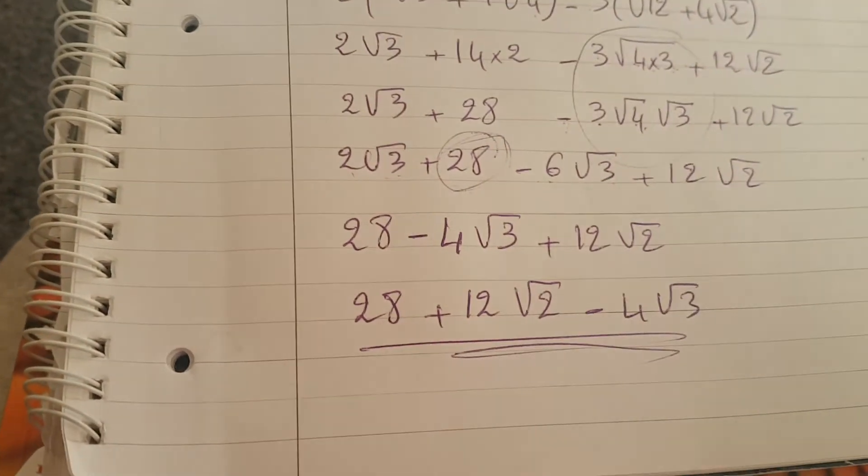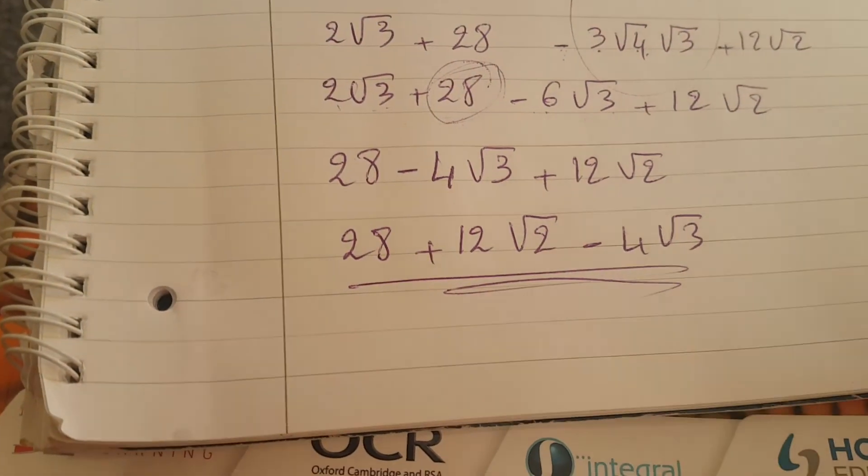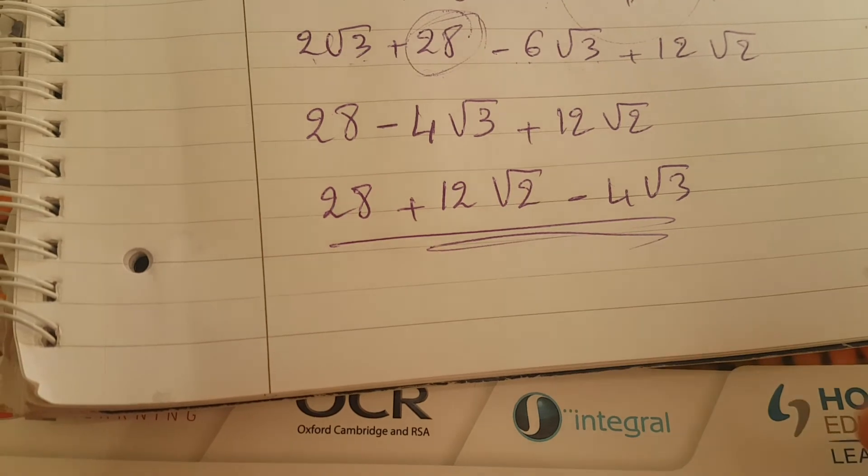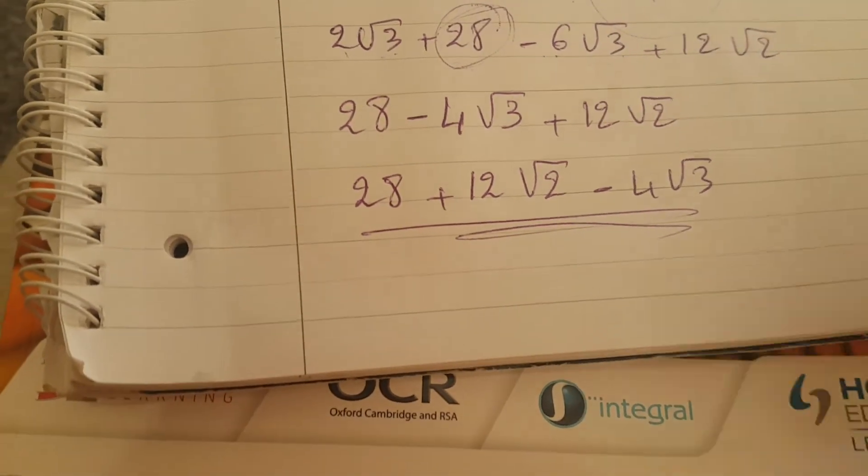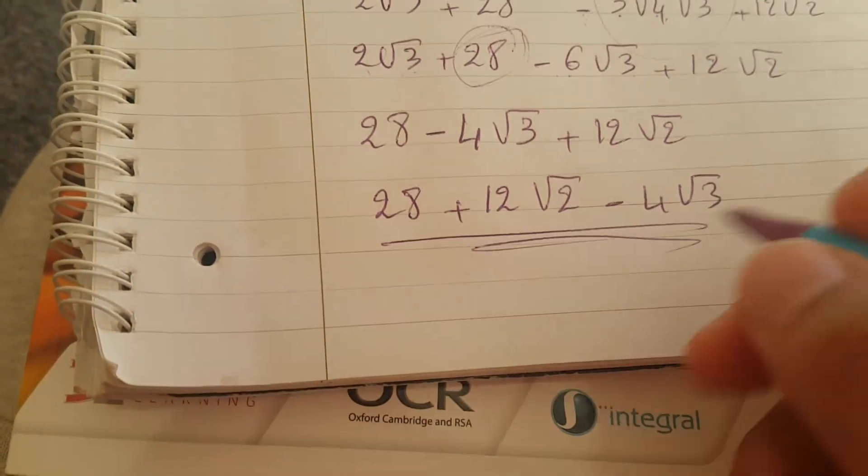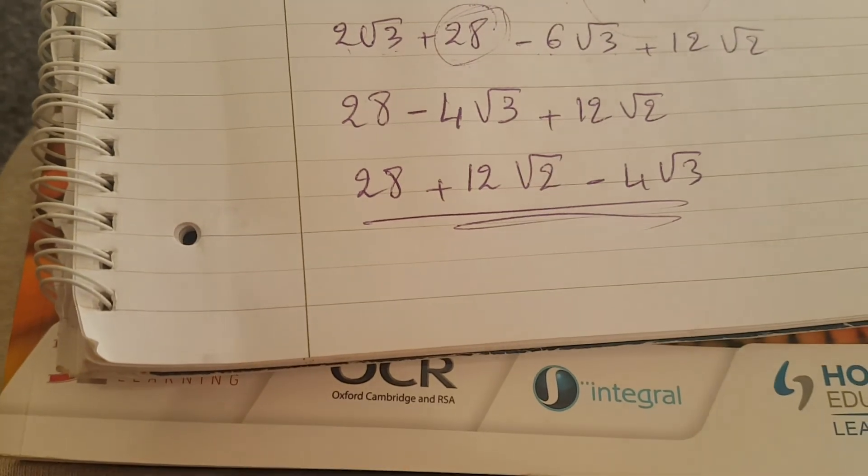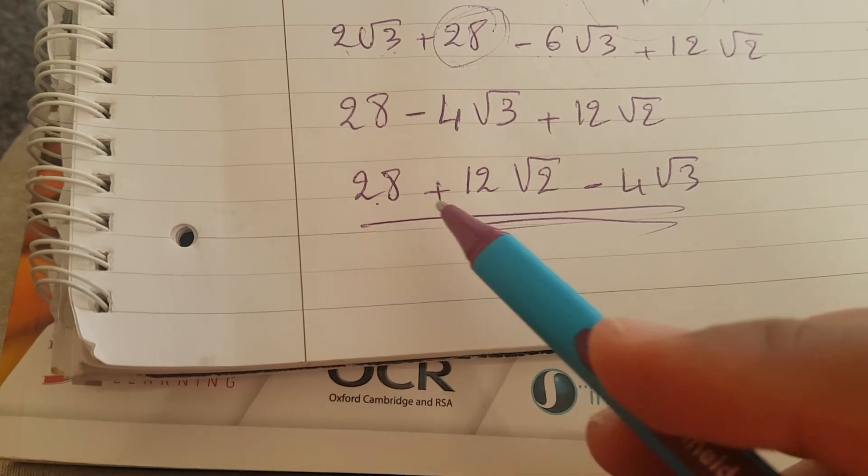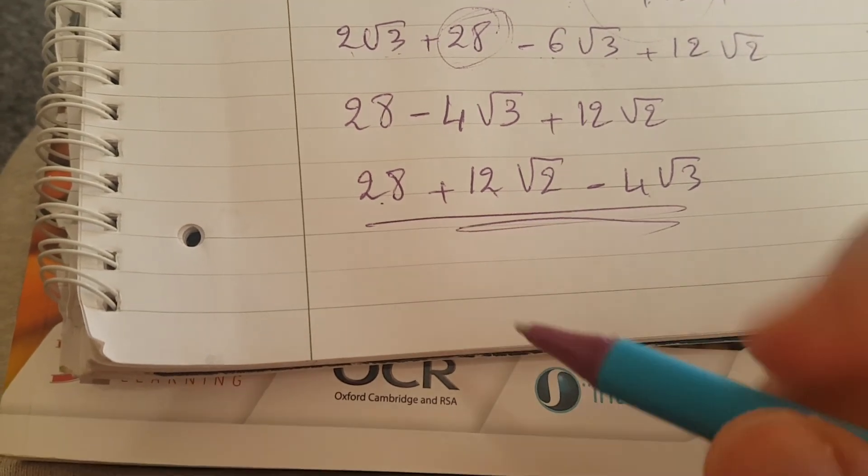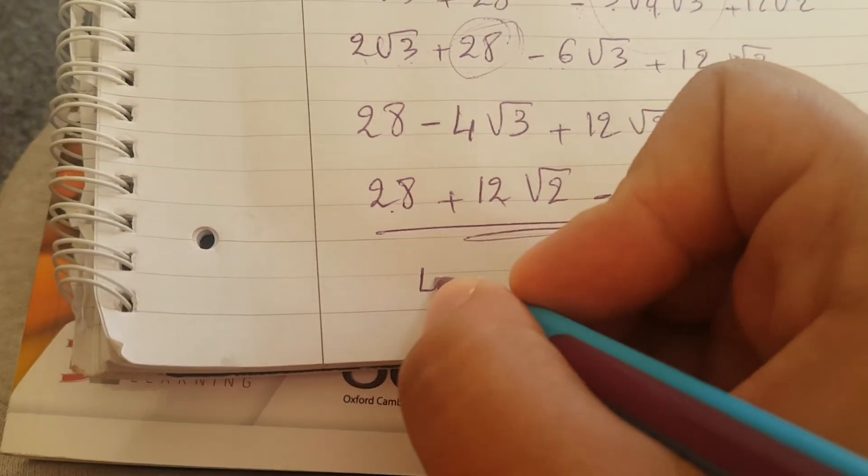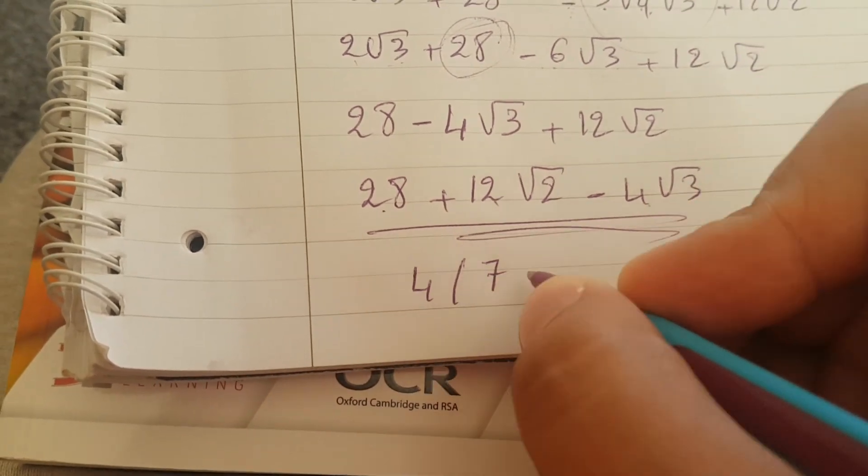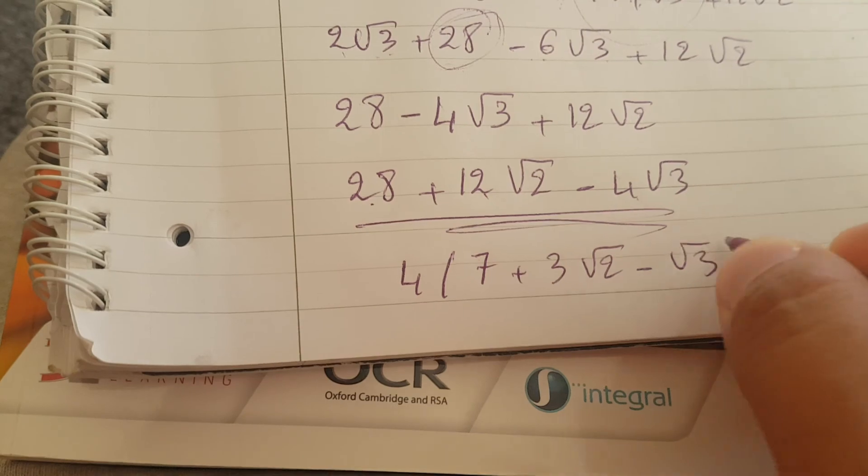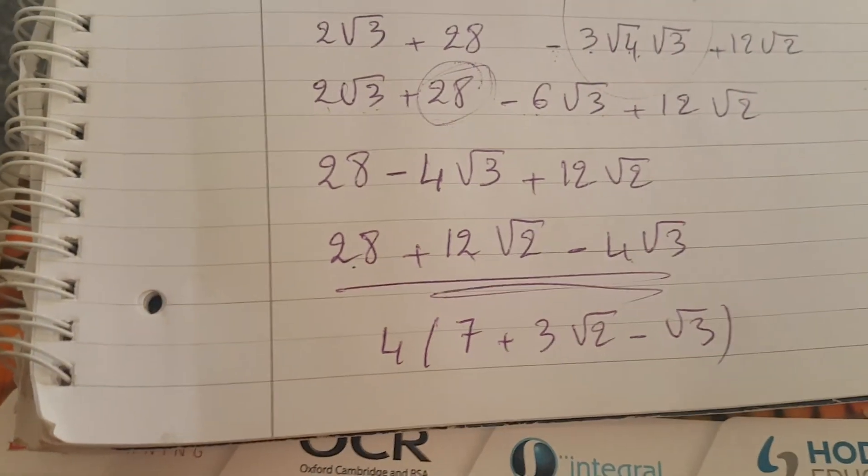If they want us to factorize it, or sometimes they tell us write it in form of something, we know the common factors between 28, 12, and 4 - the highest common factor is 4. So you can say it's 4 times 7 plus 3 square root of 2 minus square root of 3. That's the same. Thank you.